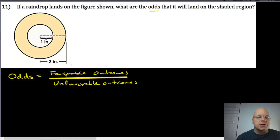Whereas probability is the ratio of favorable outcomes to total possible outcomes. So the favorable outcomes here would be landing on the shaded region.